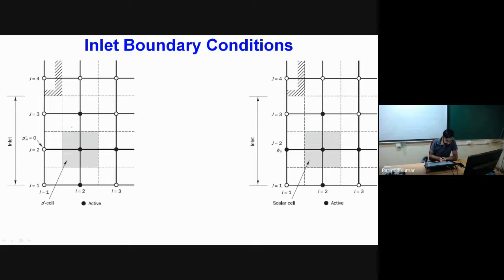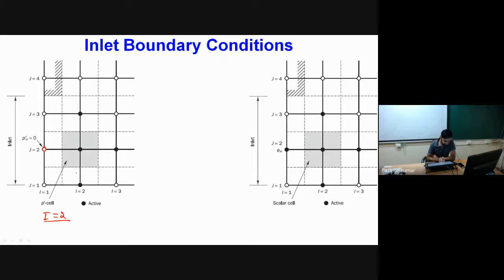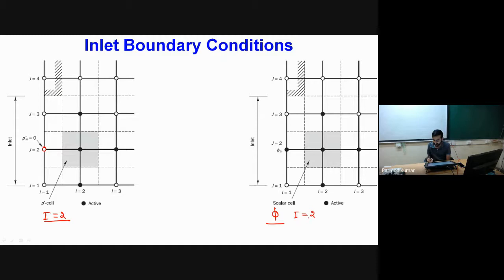For scalar cells, since some scalar nodes lie outside the domain, we start solving from capital I = 2. For the pressure correction equation, since the inlet velocity is known exactly, u* = u_in, so the pressure correction p' at the inlet face is equal to zero. We can also set a_W = 0 when incorporating this into the pressure correction equation. Similarly, scalar transport quantities φ are solved starting from I = 2, with φ_W = φ_inlet.